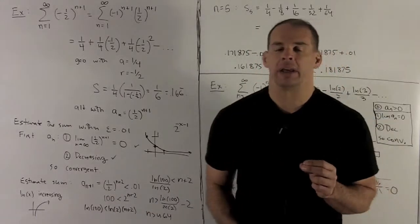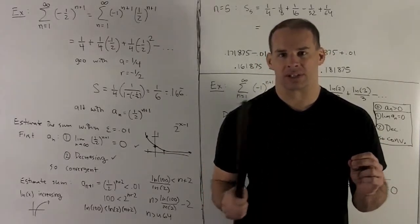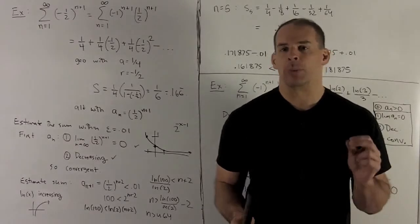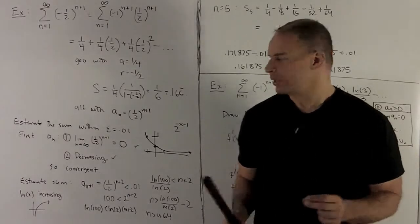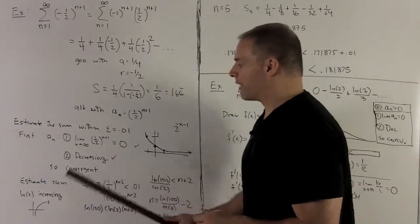Now you might be worried, well, why does the inequality stay where it is? How do I know it doesn't flip? That's the whole point of increasing and decreasing. If I'm increasing, which natural log definitely is, because if you look at the graph, it goes up like this.